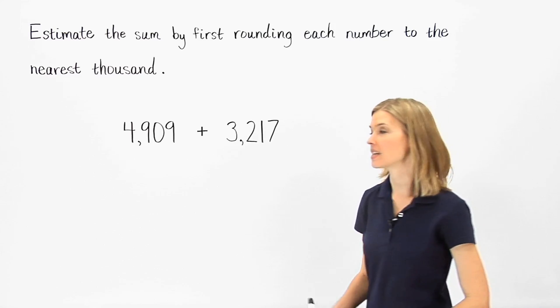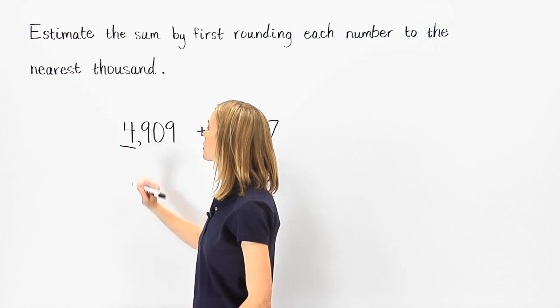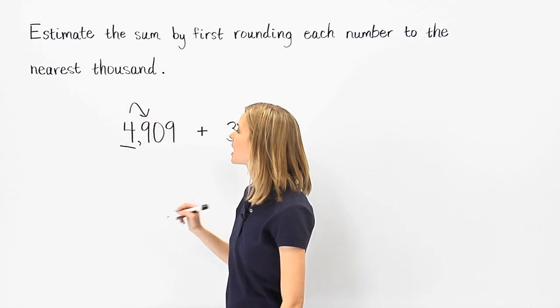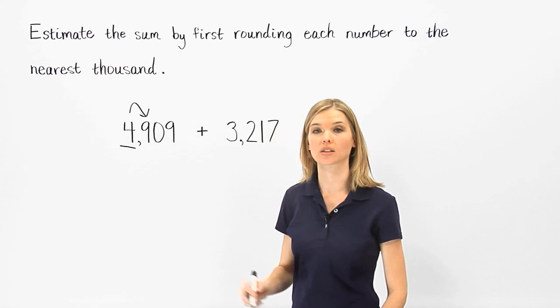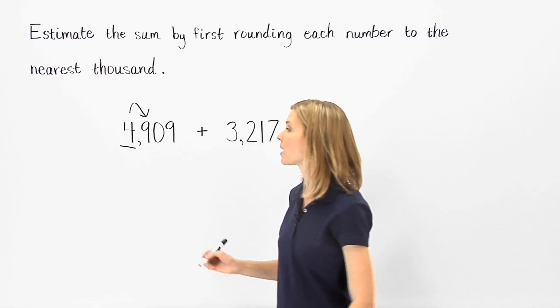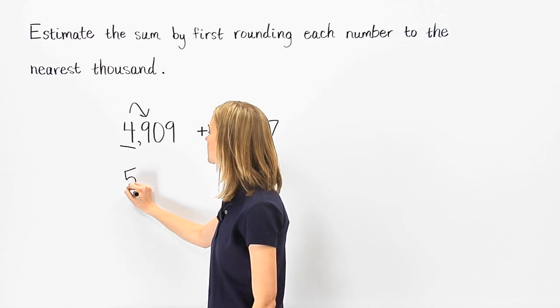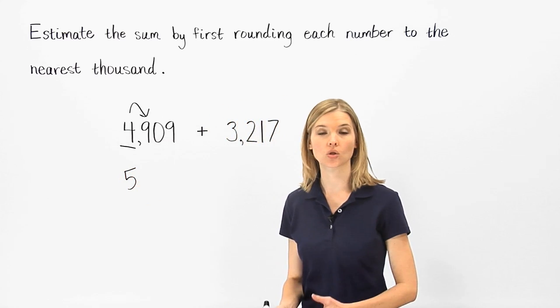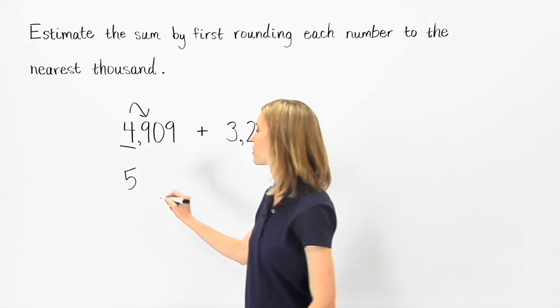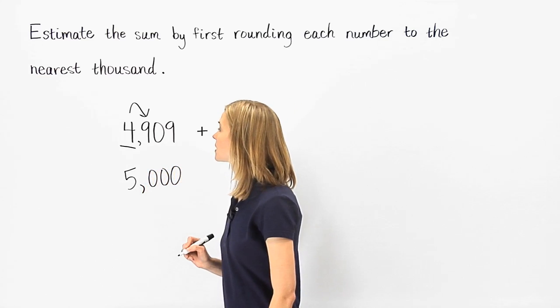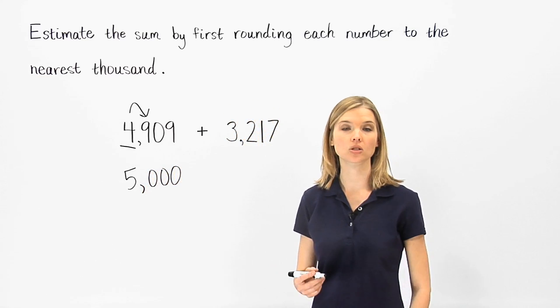In 4,909, the 4 is in the rounding place, so we look at the digit to the right of the 4. The 9 in this position tells us to round up, so we add 1 to the digit in the rounding place to get 5, and we change all digits to the right of the rounding place to 0. So 4,909 rounds up to 5,000.